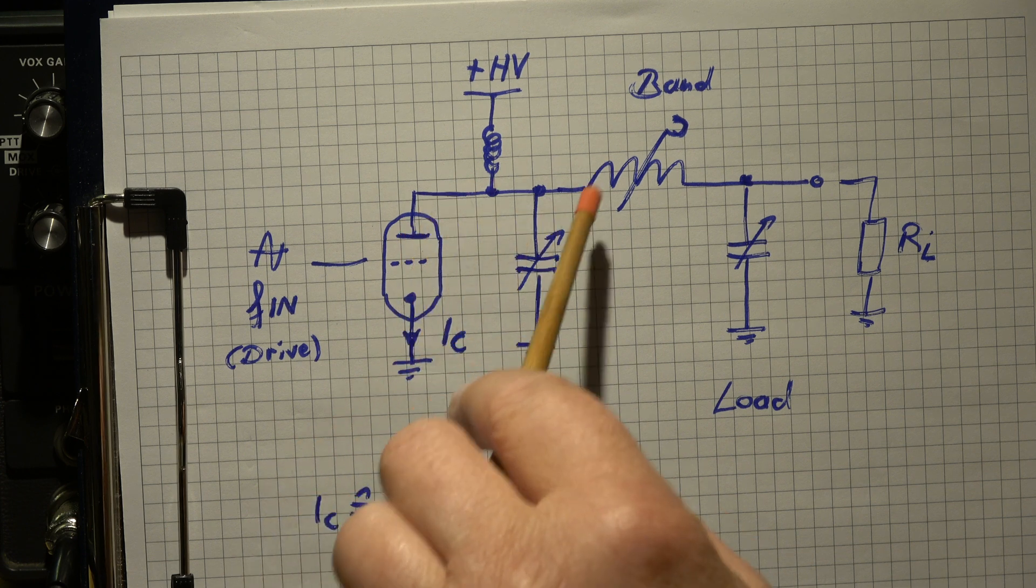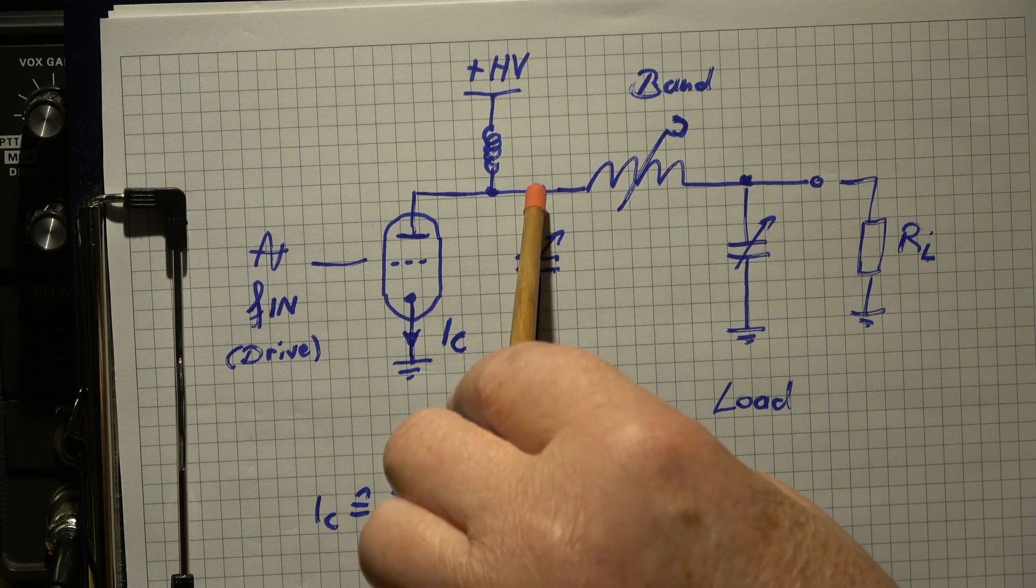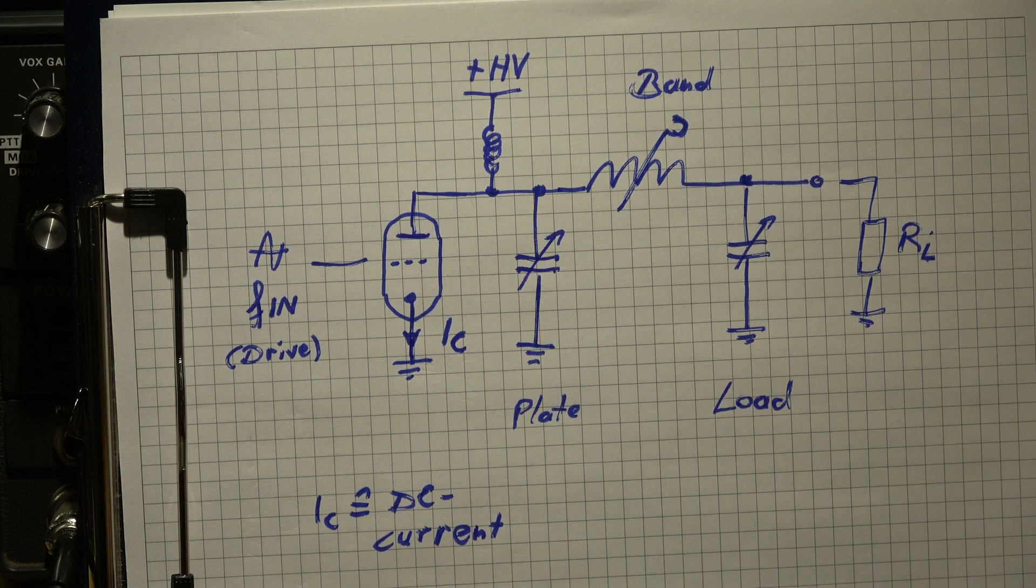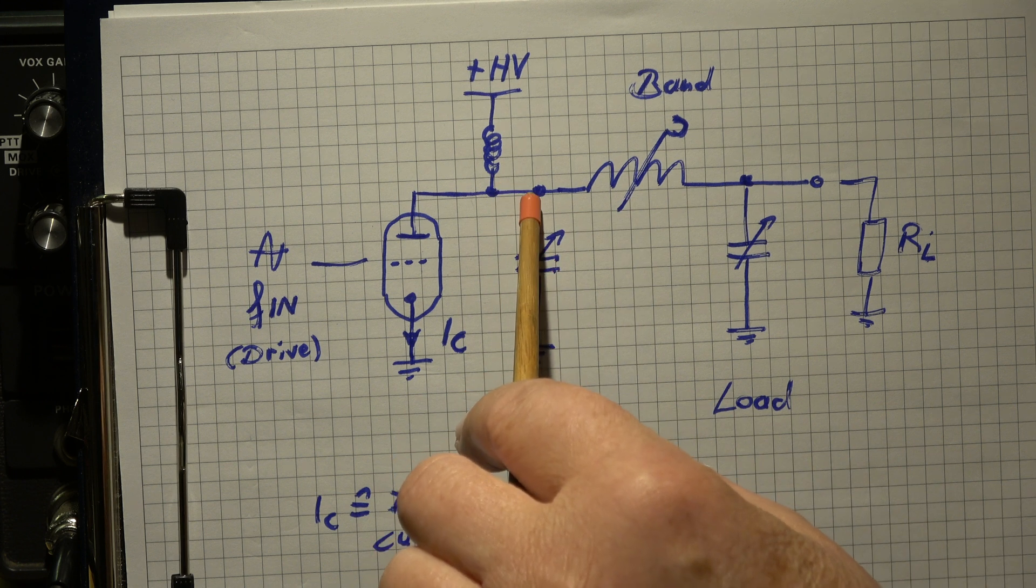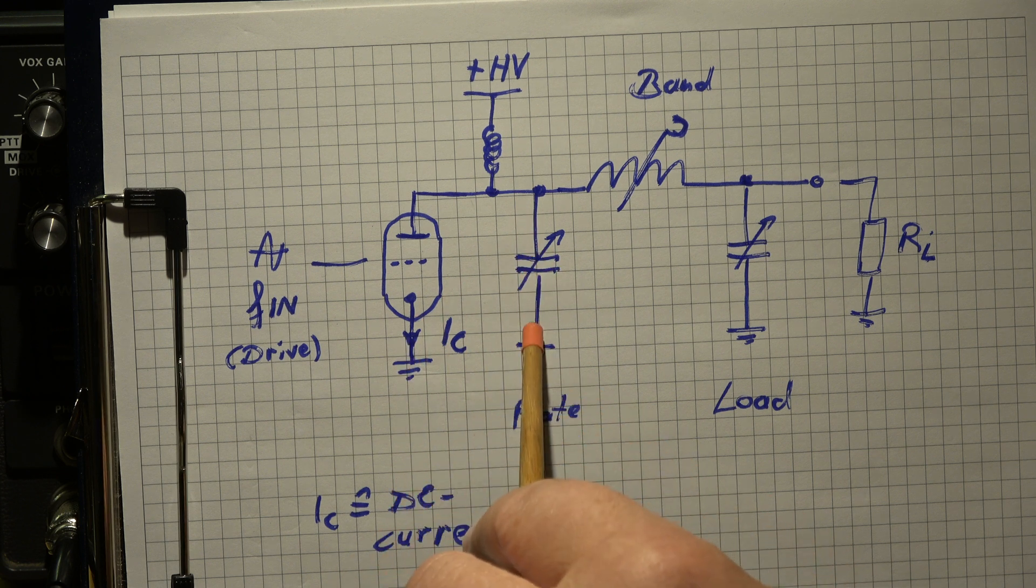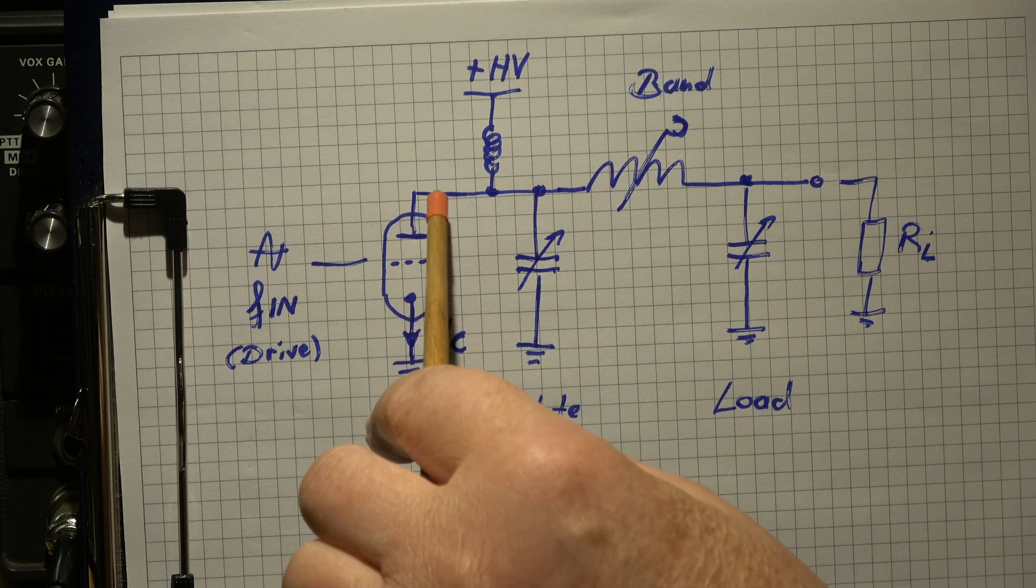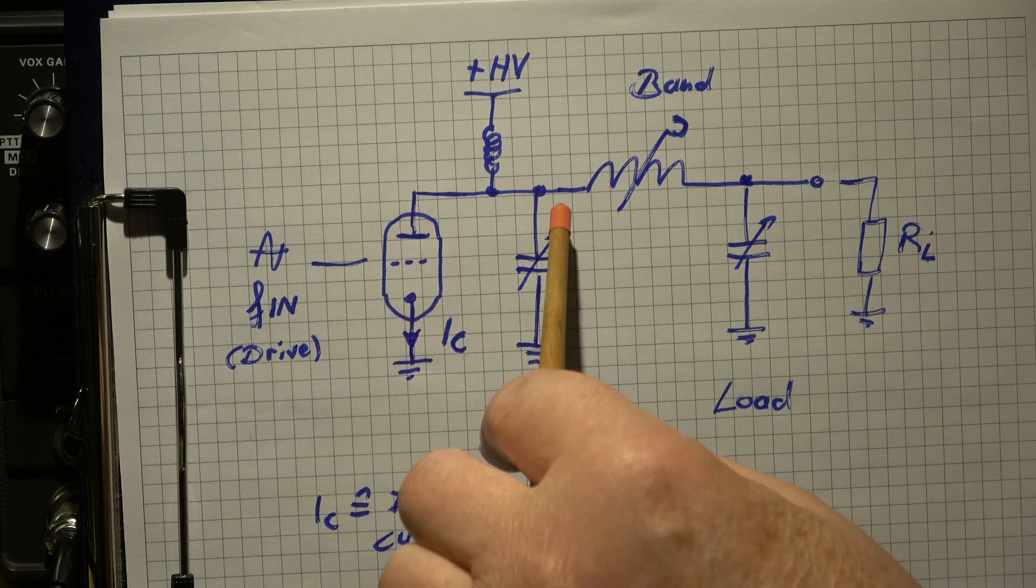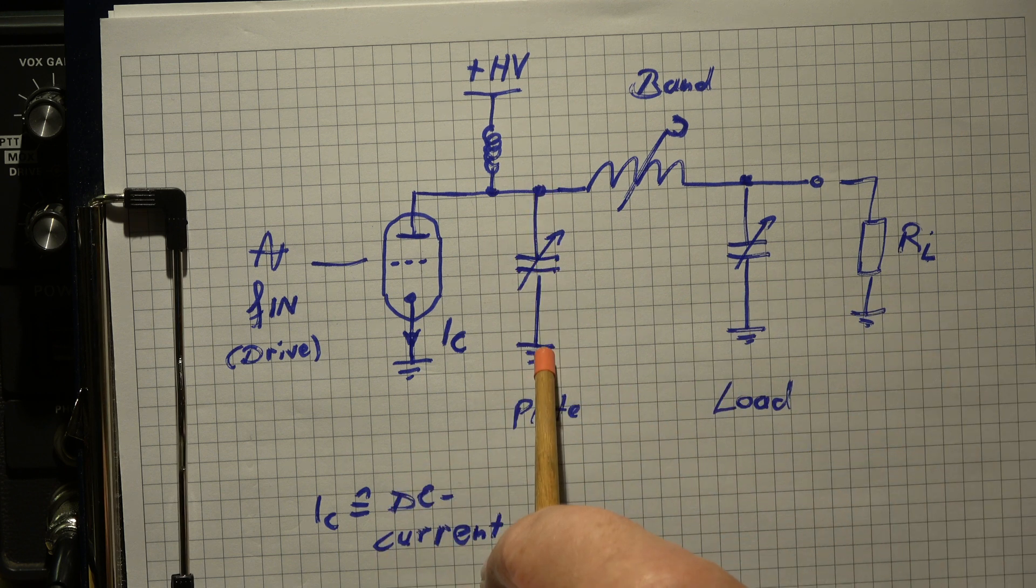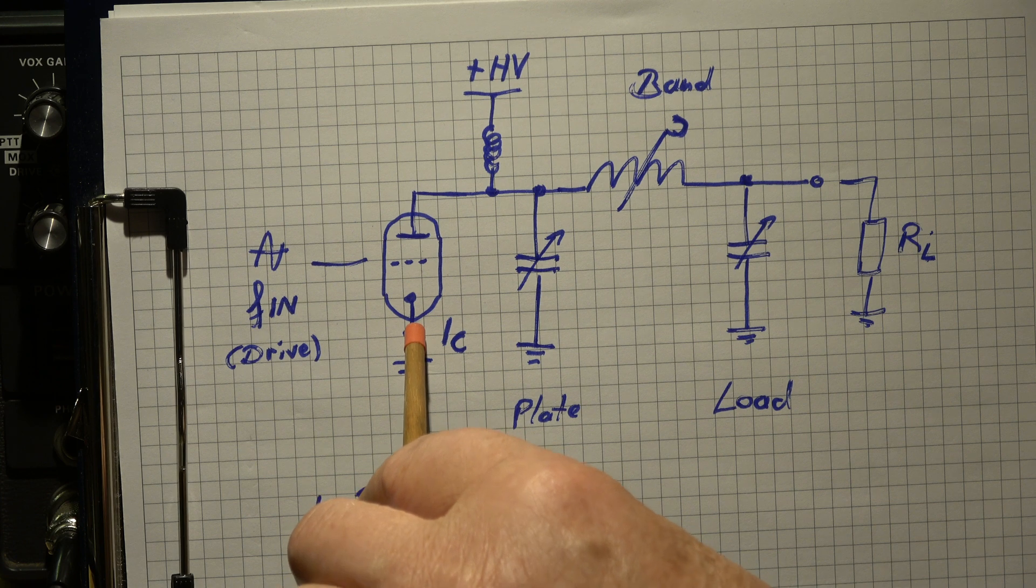And this is done by aligning, by tuning this capacitor here. And this means when we have the best tuning, we have minimum current. Because when we have here bad tuning, the tube cannot deliver its high frequency which is generating to the circuit because the circuit is mismatched. Then we have here more current flowing through the tube. It means more heat in the tube but not more output power due to the mismatched or mistuned plate.